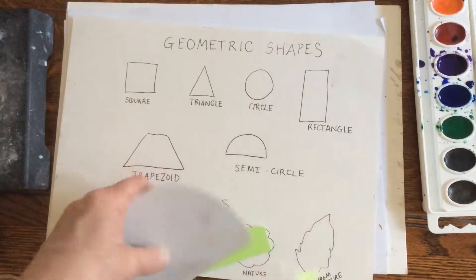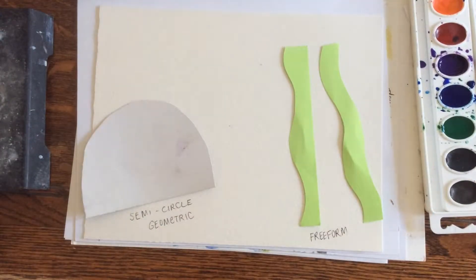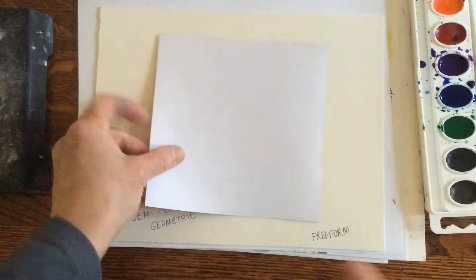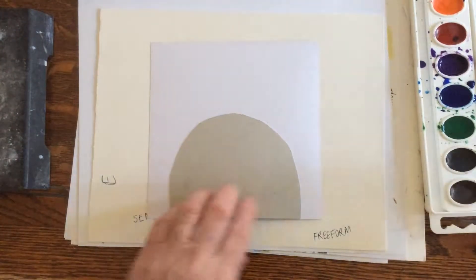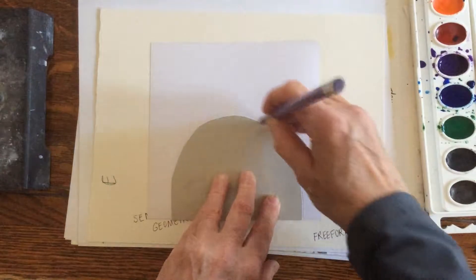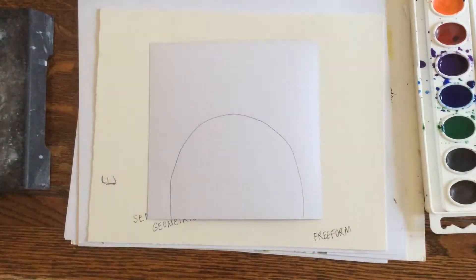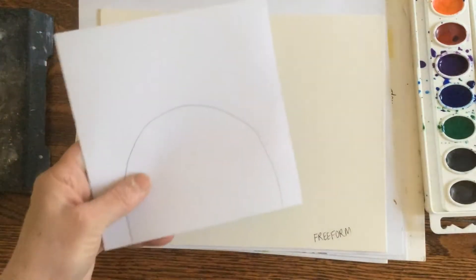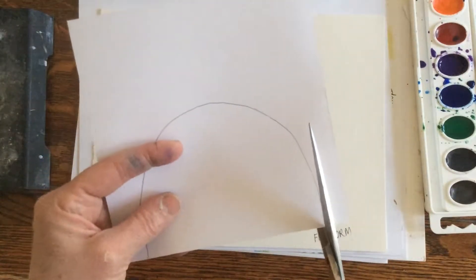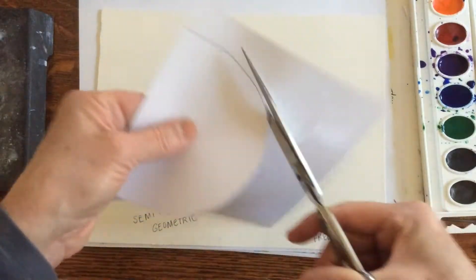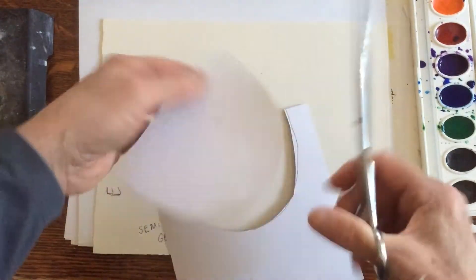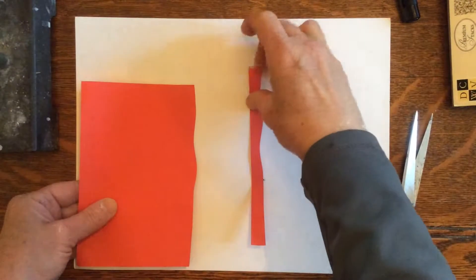For the squid's body, you're going to take a fancy piece of paper, turn it over on the white side, and trace a semicircle with your pencil. Then cut the semicircle with your scissors, carefully following the line.